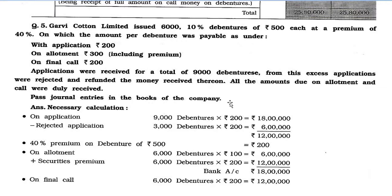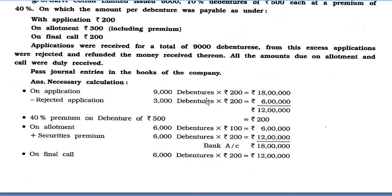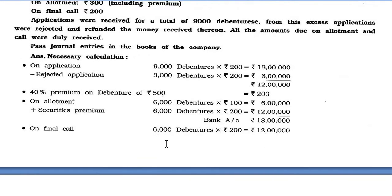Pass journal entries in the books of the company. Necessary Calculation: On application — 9,000 debentures × Rs. 200 = Rs. 18,00,000; minus rejected applications 3,000 × Rs. 200 = Rs. 6,00,000. 40% premium on debenture of Rs. 500 = Rs. 200 premium. On allotment — 6,000 debentures × Rs. 300 = Rs. 18,00,000 (comprising Rs. 6,00,000 to debenture account and Rs. 12,00,000 to security premium). On final call — 6,000 debentures × Rs. 200 = Rs. 12,00,000.